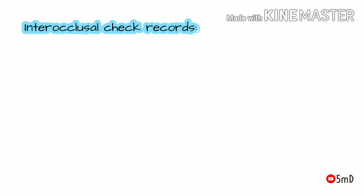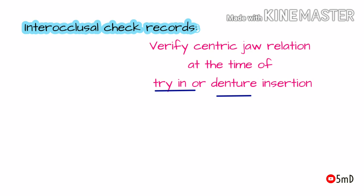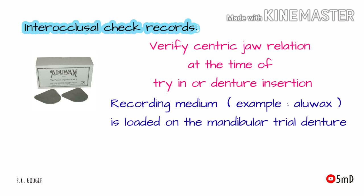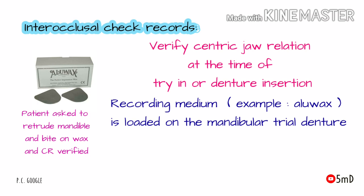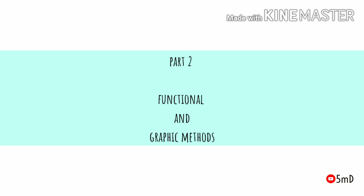The second static method is the inter-occlusal check record. As the name suggests, it is used to verify or check the centric jaw relation at the time of try-in, verification, or denture insertion. The maxillary trial denture is inserted in the patient's mouth and the recording medium — usually aloe wax — is loaded onto the occlusal and incisal surface of the mandibular teeth. That's all about the static methods used to record CR. The functional methods and graphic methods will be covered in Part 2. Stay tuned.